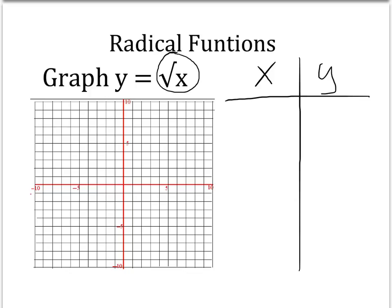We don't want to use numbers like 13 or 26. We want numbers we can take the square root of easily. So I start with numbers like 0, 1, 4, and 9. These all have perfect square roots, so it makes it easy to figure out what y is.